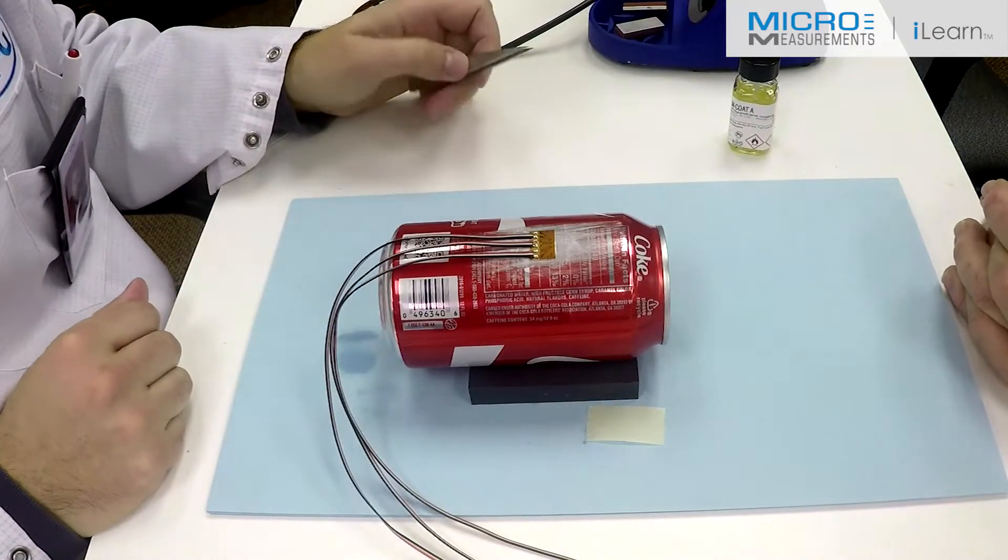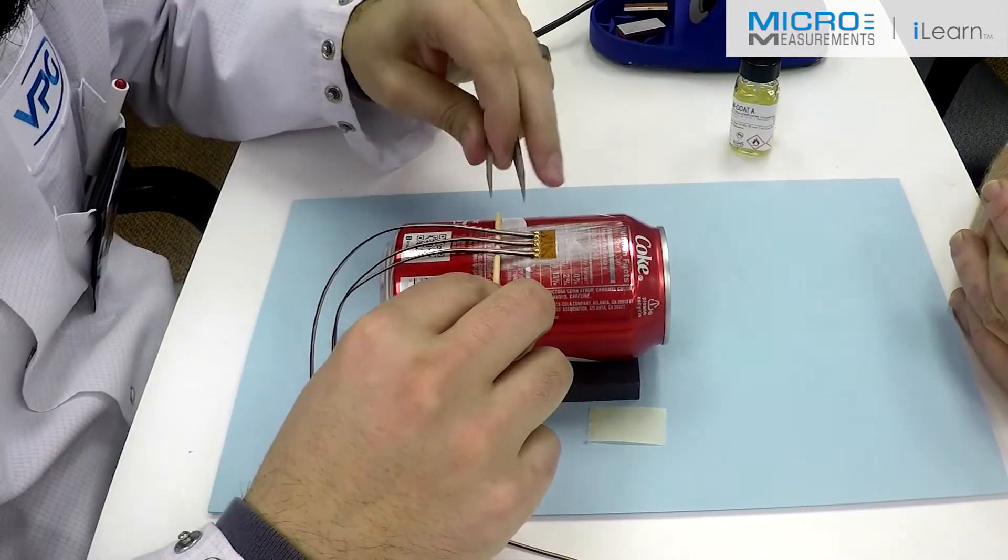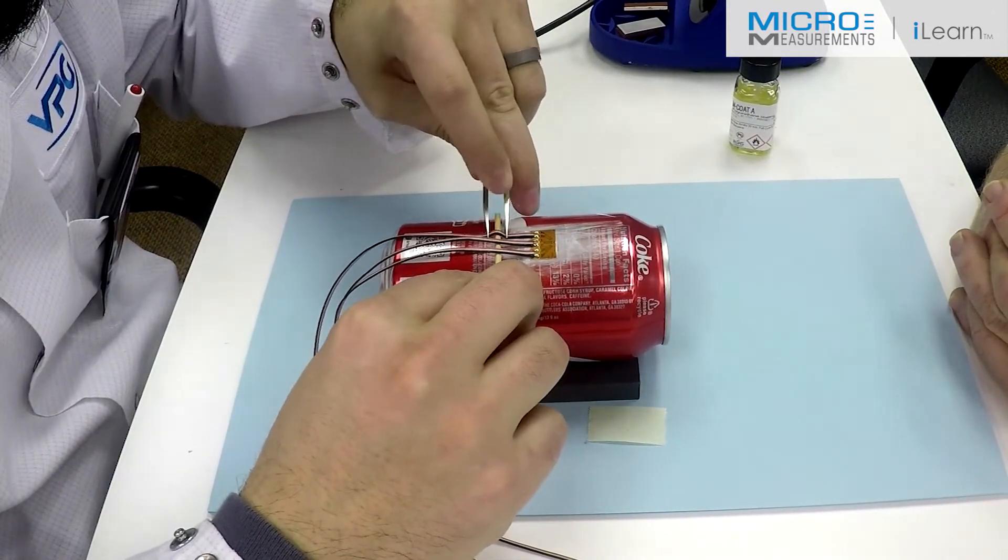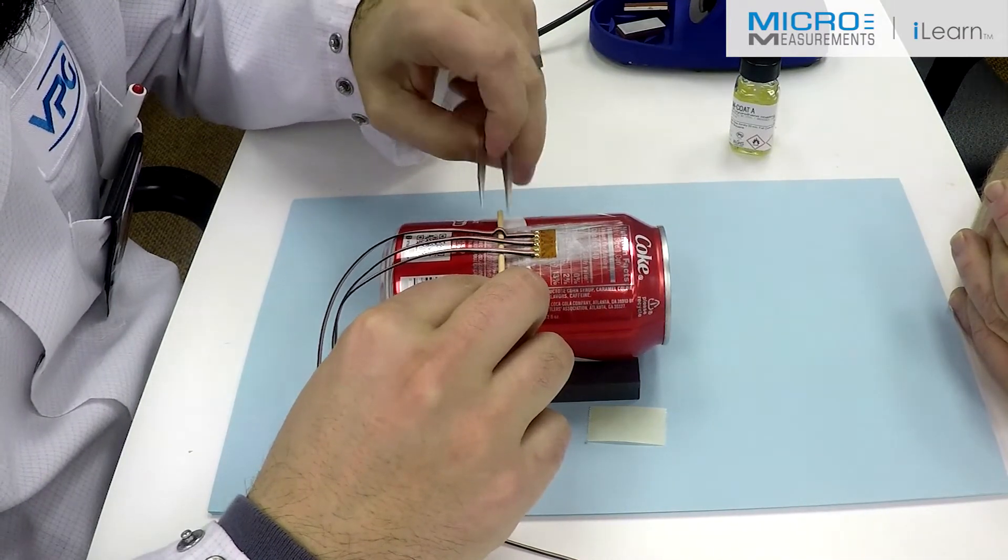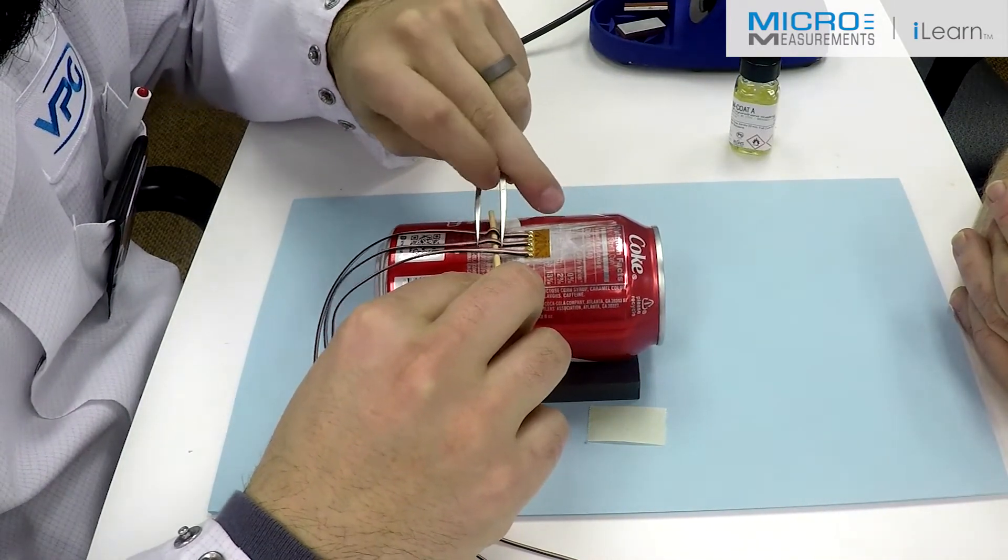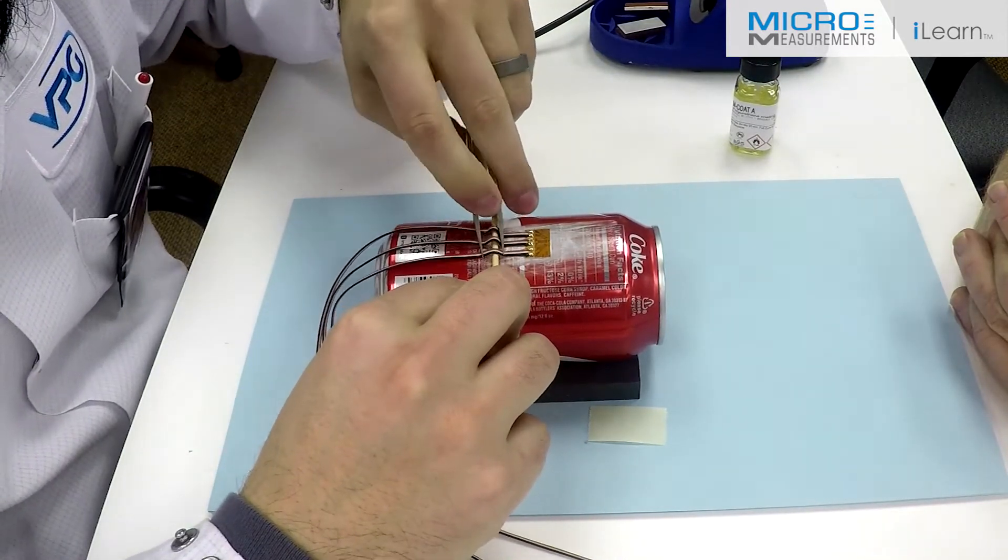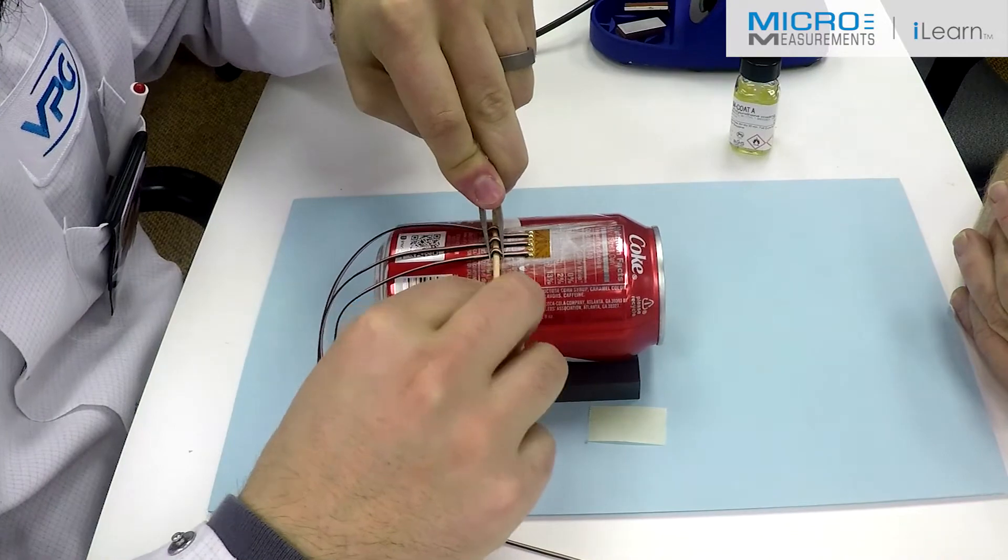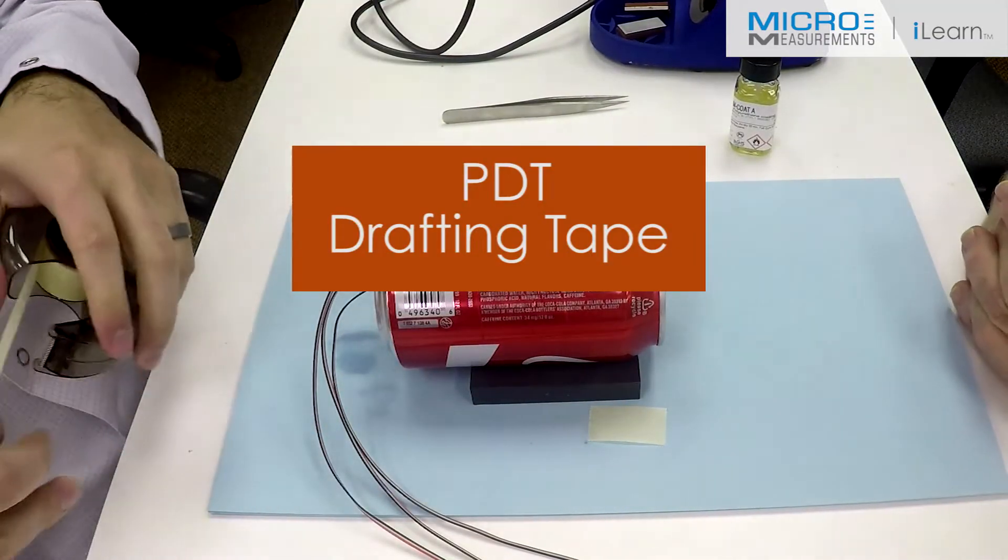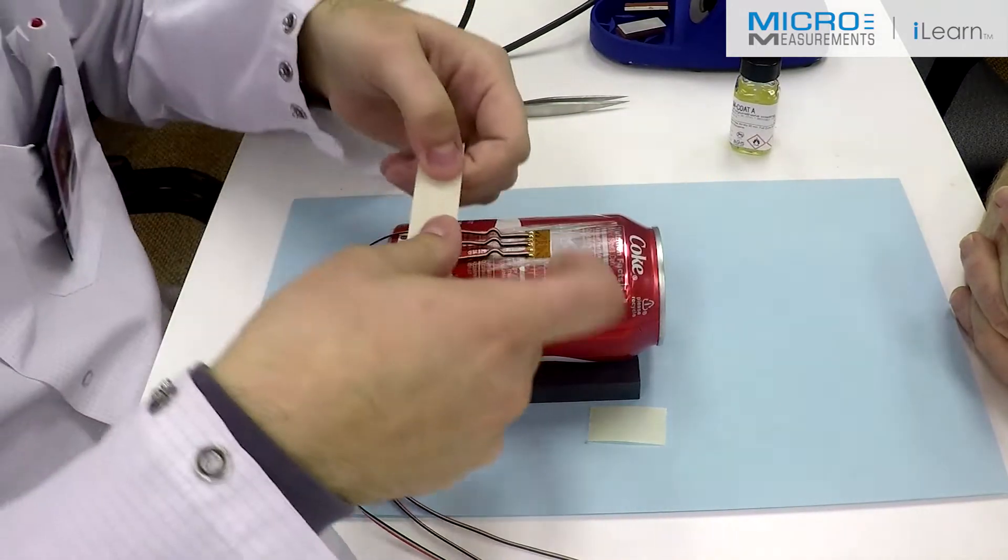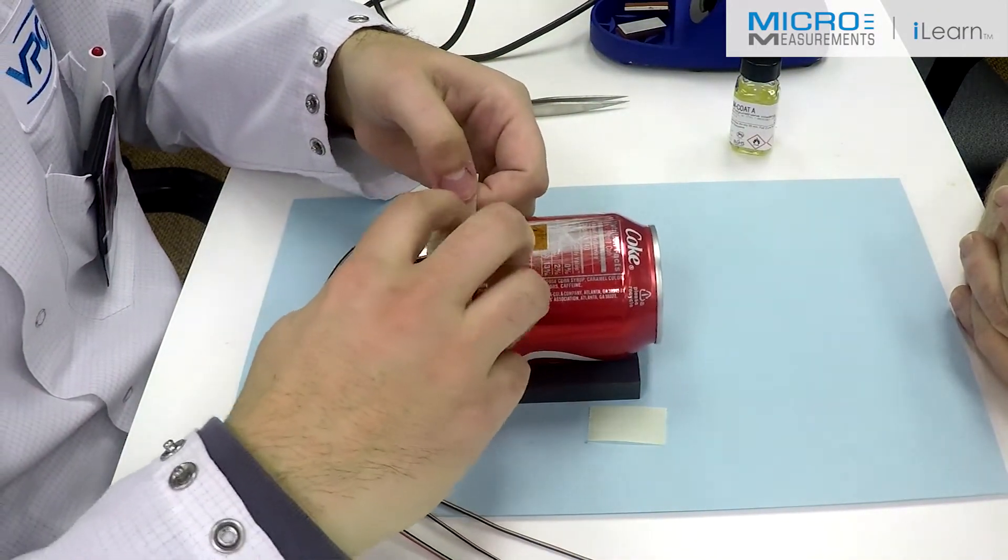He'll take one of the cotton tip applicators and his blunt-nosed or pointed tweezers, and he'll push down on the wire and rock it away from the gauge site. And he'll do that for the individual conductors, all three of them. Having completed that, he'll use another piece of the paper drafting tape, the PCT-2 or PDT-2-3, and hold down the lead wires.